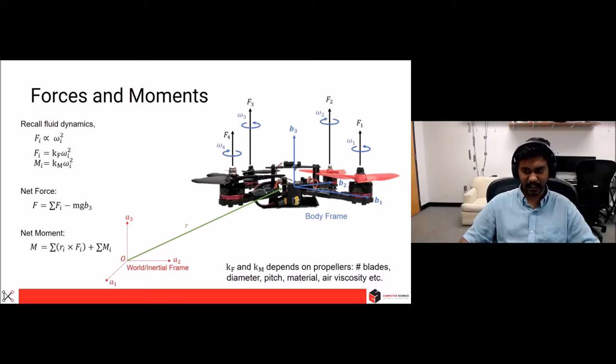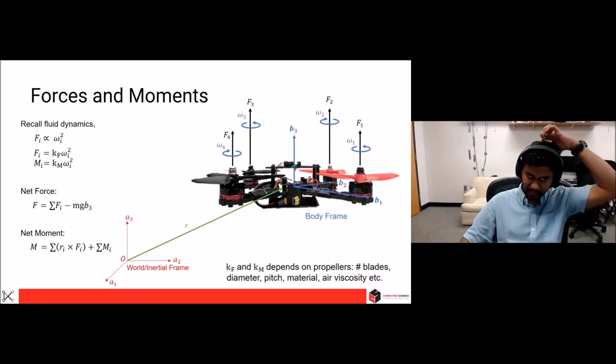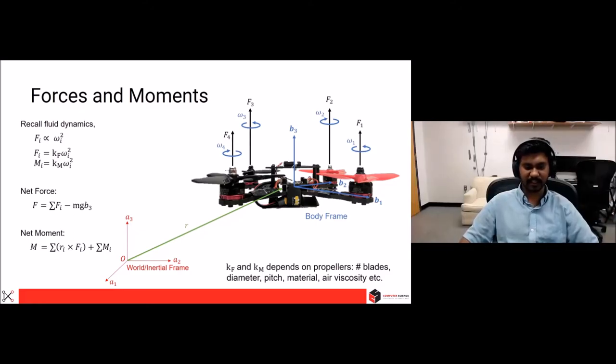Next, from Newton's equations, we know that the net force is equal to the mass into acceleration. F is sigma of forces you obtain from the four propellers minus mass into gravity into B3. We have B3 here because we are propagating this onto the coordinate frame or the body frame in terms of z-axis.